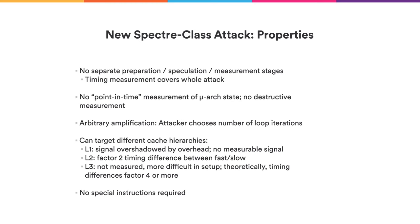An important property about this new kind of Spectre class attack is that it does not require any kind of separable measurement — we measure the whole execution and can scale it up by simply performing more loop iterations. In principle, we can target many parts of the cache hierarchy. Targeting L1 cache does not yield a really measurable signal, but targeting L2 cache is sufficient to produce a measurable signal. With L3 cache it would produce a far stronger signal, though it is a little more difficult to set up. Also, no special instructions are required — all code gadgets can be produced using WebAssembly.